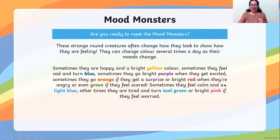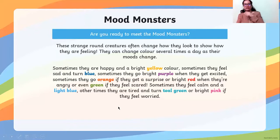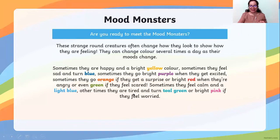Sometimes they feel calm and turn light blue — blue and light blue are different colors. Other times they are tired and turn teal green, or bright pink if they feel worried. To review: yellow for happy, blue for sad, purple for excited, orange for surprise, red for angry, green for scared, light blue for tired, teal green, and pink when they feel worried.